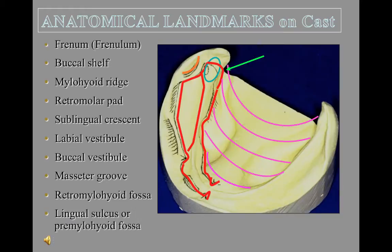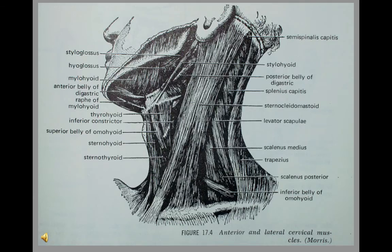Anterior to the retromylohyoid fossa is another depression in the mandible called the lingual sulcus or the premylohyoid fossa. This slide gives you a muscular picture of the anatomy of the mylohyoid muscle. Note the hammock-shaped appearance of the fibers of this muscle and how they run perpendicular to the mandibular ridge.